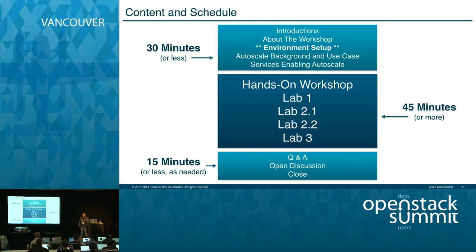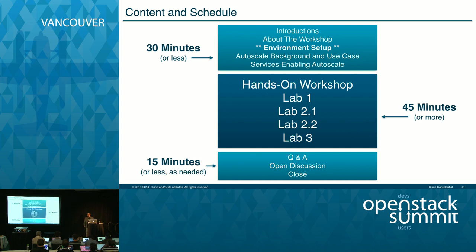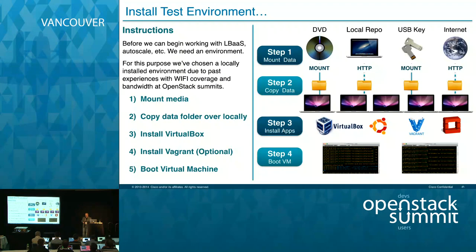The content and schedule: the first 30 minutes are dedicated to getting the environment up and running so we can do the lab exercises afterwards. The bulk of the middle will be the hands-on workshop, and at the end Q&A and open discussion. We'd like a full 60 minutes in the middle, so let's get through this first 30 minutes as quickly as possible. When some of you came in, you saw the Vagrant screen already running — that is not the process for the workshop.